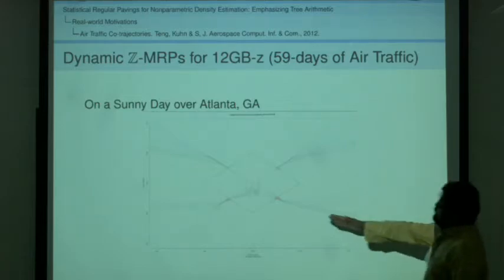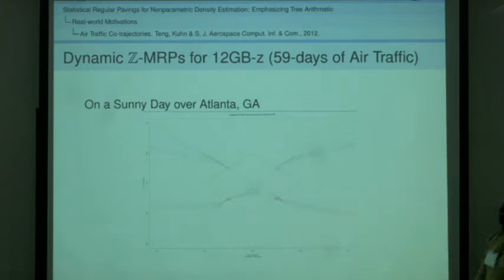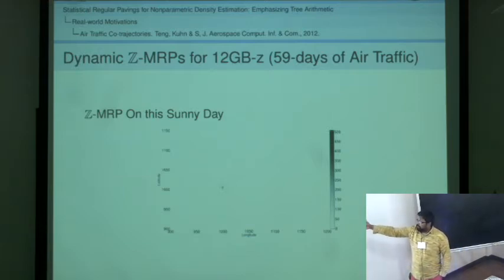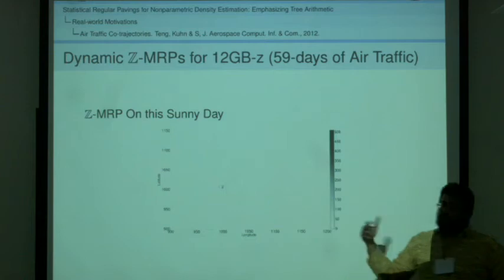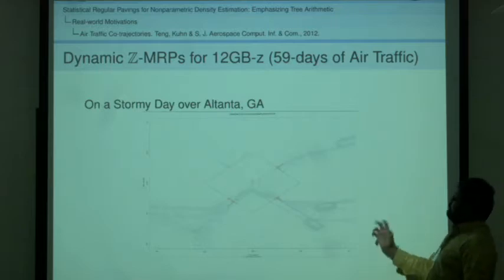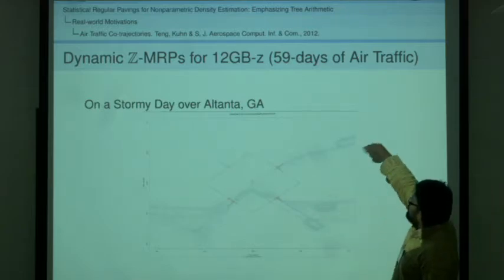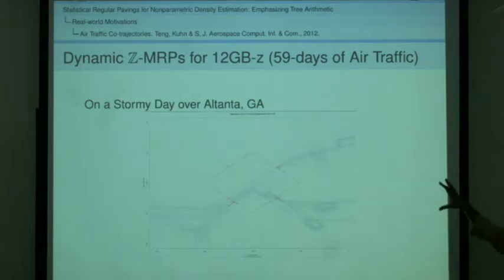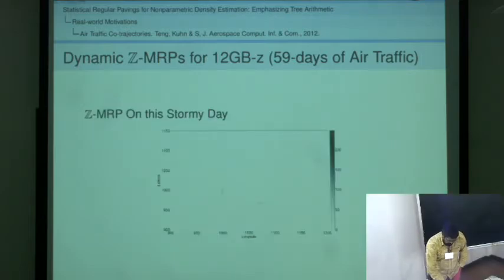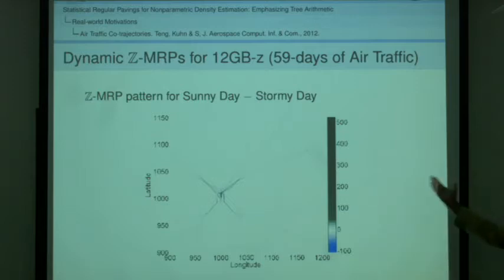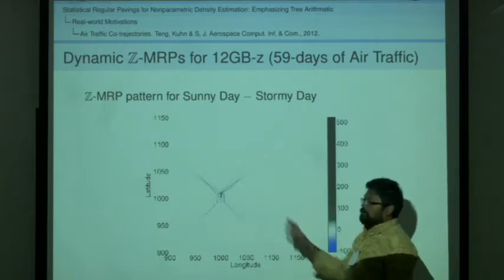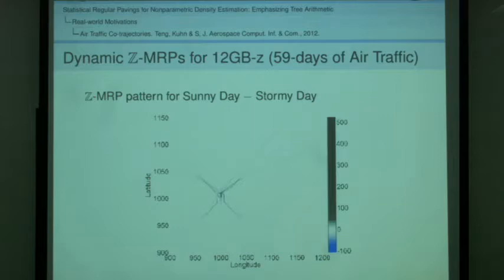On a sunny day over Atlanta, Georgia, flights are landing sweetly. There are four runways. When you do the ZMRP arithmetic, we are enclosing all those trajectories simultaneously. On a stormy day, in a certain type of stormy day, flights are circling, waiting. We want to capture the arithmetic of these things in a safe way. This is ZMRP of a sunny day minus a stormy day. This is only of interest for machine learning.